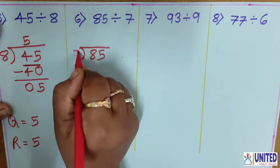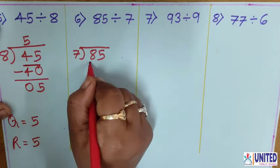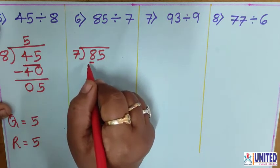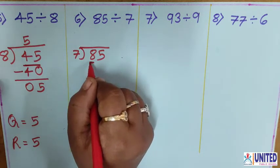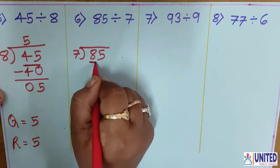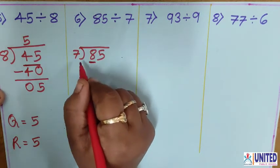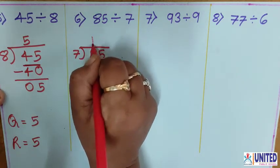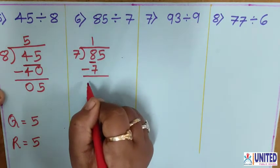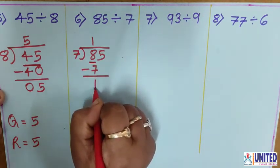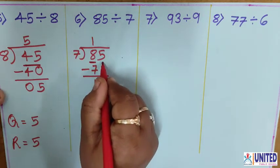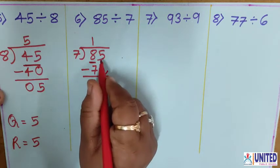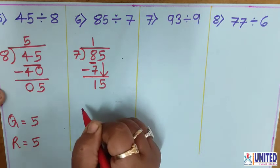Number 6: 85 divided by 7. The first digit is 8, which is bigger than divisor 7, so choose only one digit. 8 doesn't come in the 7 table, so take the nearest: 7 ones are 7. Write 1 at the quotient. Then 8 minus 7 is 1. Bring down the next digit 5, making 15.